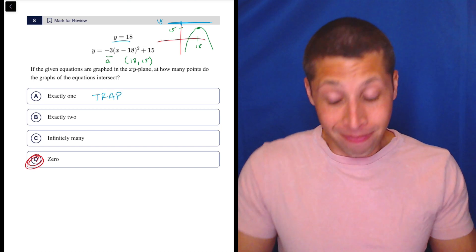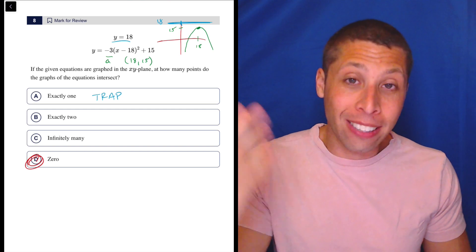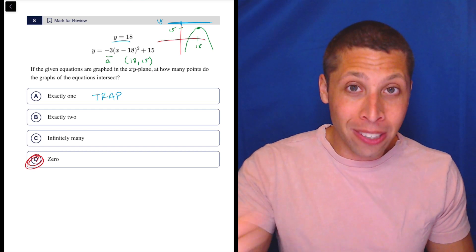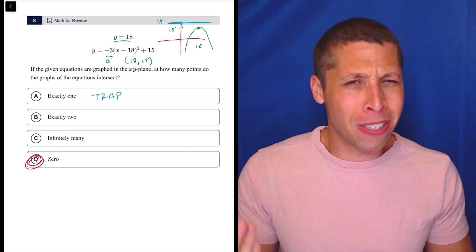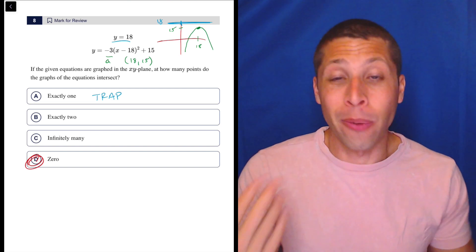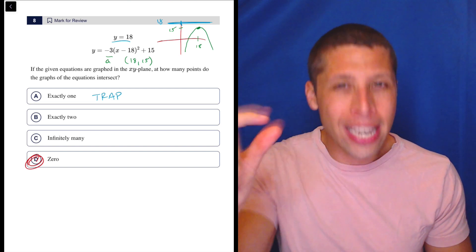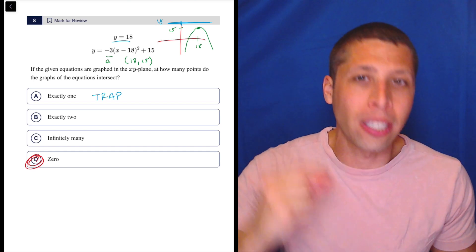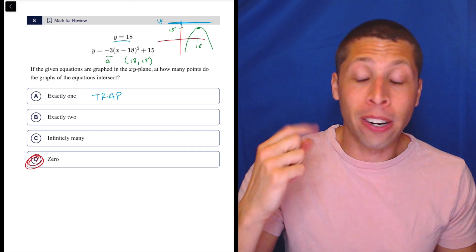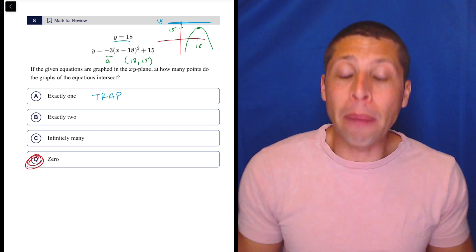So I think the trap answer here is choice A. And I think it's telling that choice A is exactly one. And yet they put zero all the way down at the bottom. Shouldn't zero come before one? Why are they doing that? Well, I think they're doing it because they know that some people are going to just see that, have that connection in their brain because they're thinking about it logically and conceptually. And they're going to pick it without thinking about the other options.